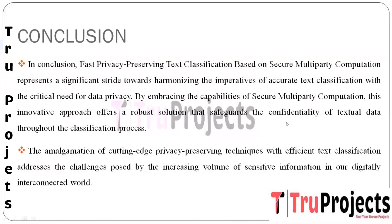In conclusion, the approach's emphasis on speed and efficiency is noteworthy, recognizing the contemporary demand for real-time processing. The system not only upholds privacy but also provides a swift and responsive solution to text classification challenges. This amalgamation of privacy, collaboration, and speed positions Fast Privacy Preserving Text Classification based on Secure Multi-Party Computation as a significant advancement at the intersection of privacy-preserving technology and text analytics, with broad applications across diverse domains.